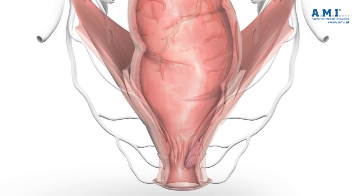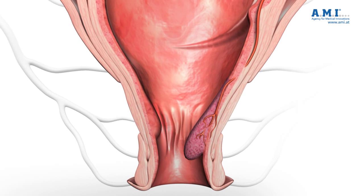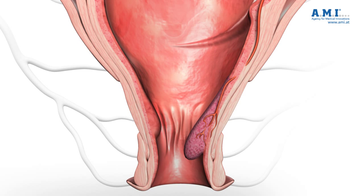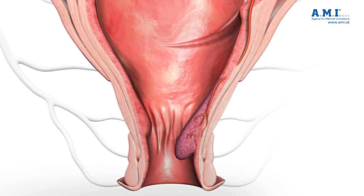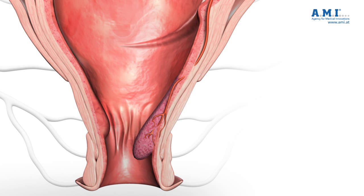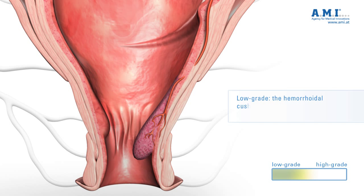Differentiating between the different grades of hemorrhoidal disease is important for determining the most suitable treatment. According to the Goeliger classification, there are four different grades. For the purposes of this presentation, we simply refer to the low and high grades of hemorrhoids. Low corresponds to grade one and grade two of the Goeliger classification — those stages of the disease where the hemorrhoidal cushions generally remain inside the anal canal.